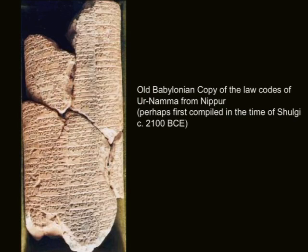He set the temple expenses at 90 gurs of barley, 30 sheep, and 30 sila of butter — temple rations. He fashioned the bronze sila measure for measuring liquid. He standardized the one mina weight and standardized the stone weight of a shekel and silver in relation to one mina. In this way, the orphan was not given to the rich man, the widow was not given to the mighty man, and the man of one shekel was not given over to the man of one mina.